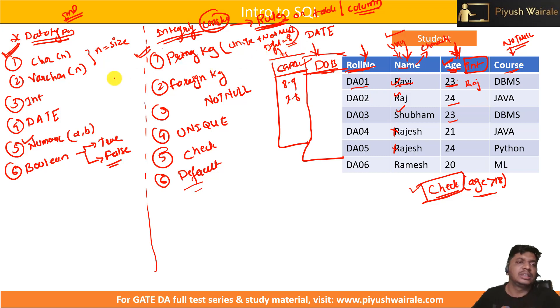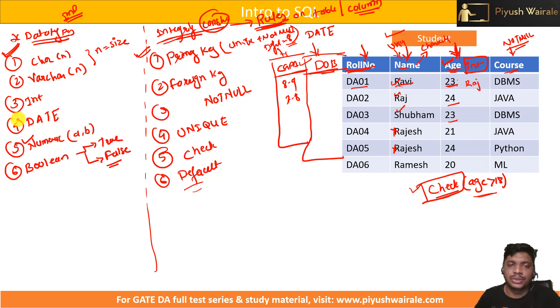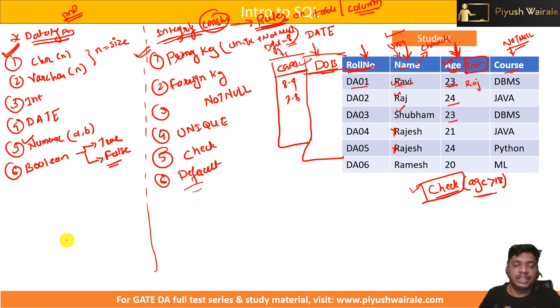We are going to discuss this in detail in the upcoming lectures, that is the next lecture. That's it from this particular lecture. In the next video, we are going to discuss about data types and integrity constraints. Thank you.